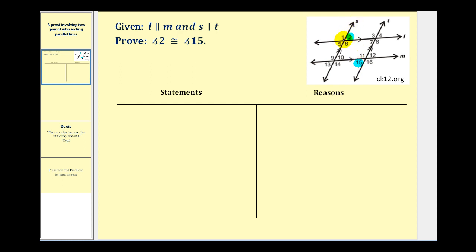We can see that angle two and angle five would be congruent because they're vertical angles. Let's go ahead and mark angle two congruent to angle five. Now looking at the parallel lines S and T cut by L, angle five and angle seven are corresponding angles and therefore those two angles are congruent.